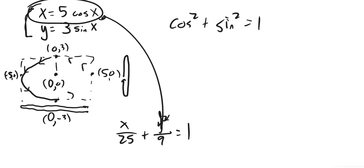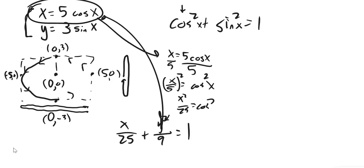So, I'm going to solve this for cosine, and then square it. So, x equals 5 cosine x, divide both sides by 5. So, x squared over 9 is sine squared. But, I want a cosine squared, because I'm going to replace this with it. So, I'm going to square both sides. So, that gives me x squared over 25 is cosine squared.